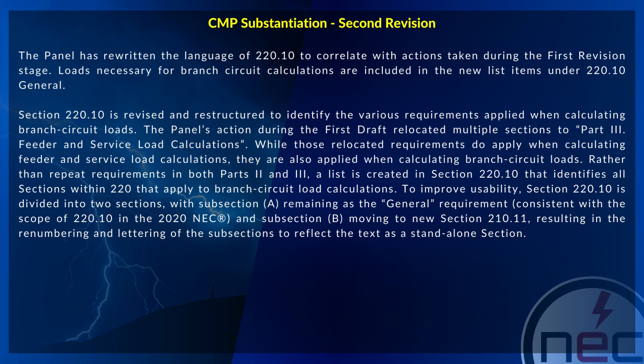The panel's action during the first draft relocated multiple sections to Part 3, Feeder and Service Load Calculations. While those relocated requirements do apply when calculating feeder and service load calculations, they are also applied when calculating branch circuit loads. Rather than repeat requirements in both parts 2 and 3, a list is created in section 220.10 that identifies all sections within 220 that apply to branch circuit load calculations.